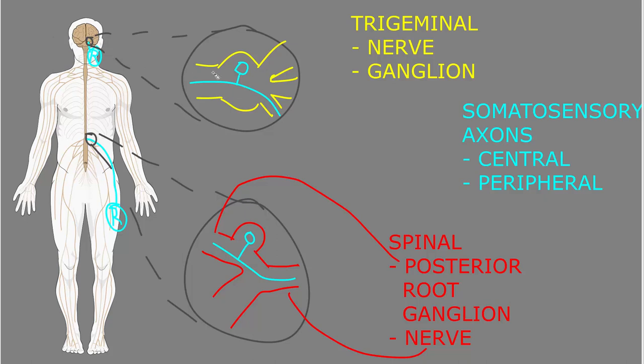So here attached to the brain stem is the trigeminal nerve, and this is the ganglia of the trigeminal nerve, where the somas for these somatosensory neurons are.